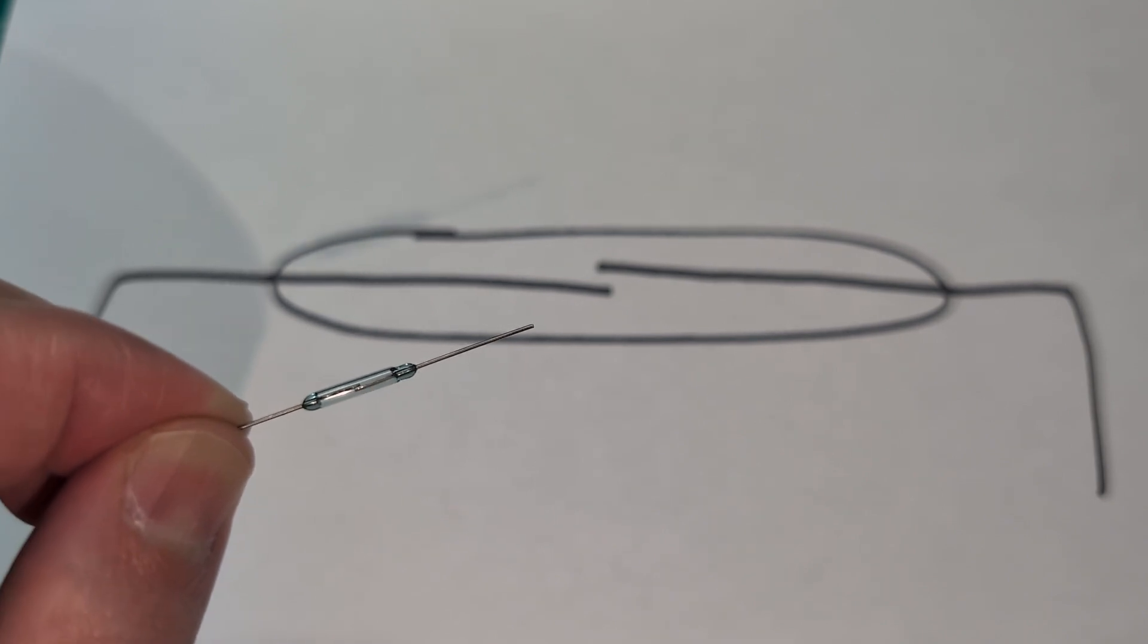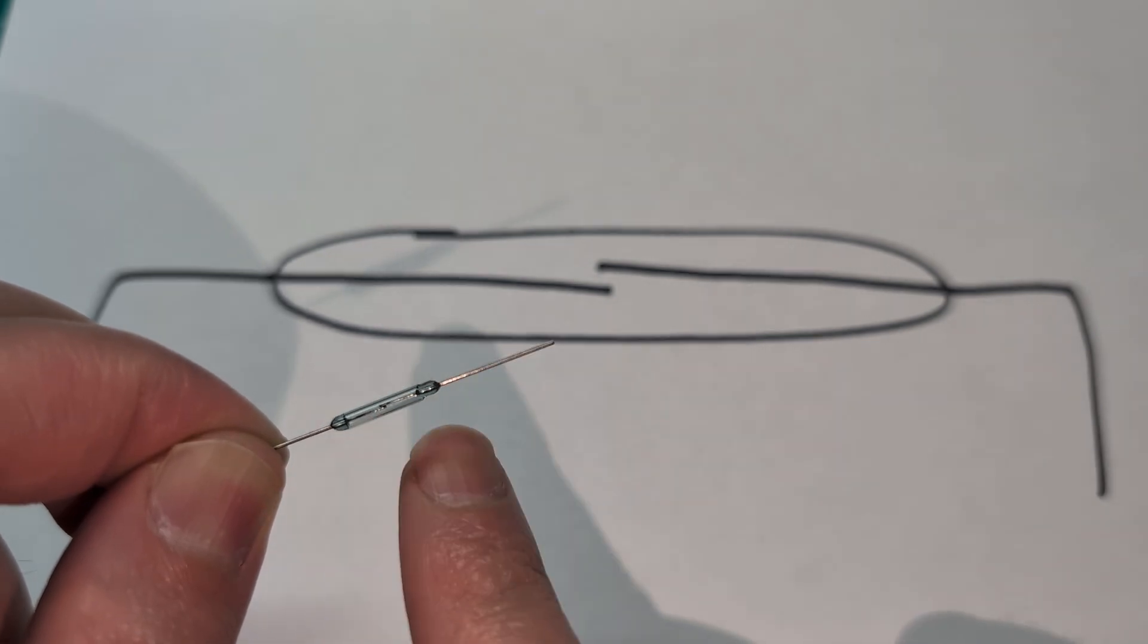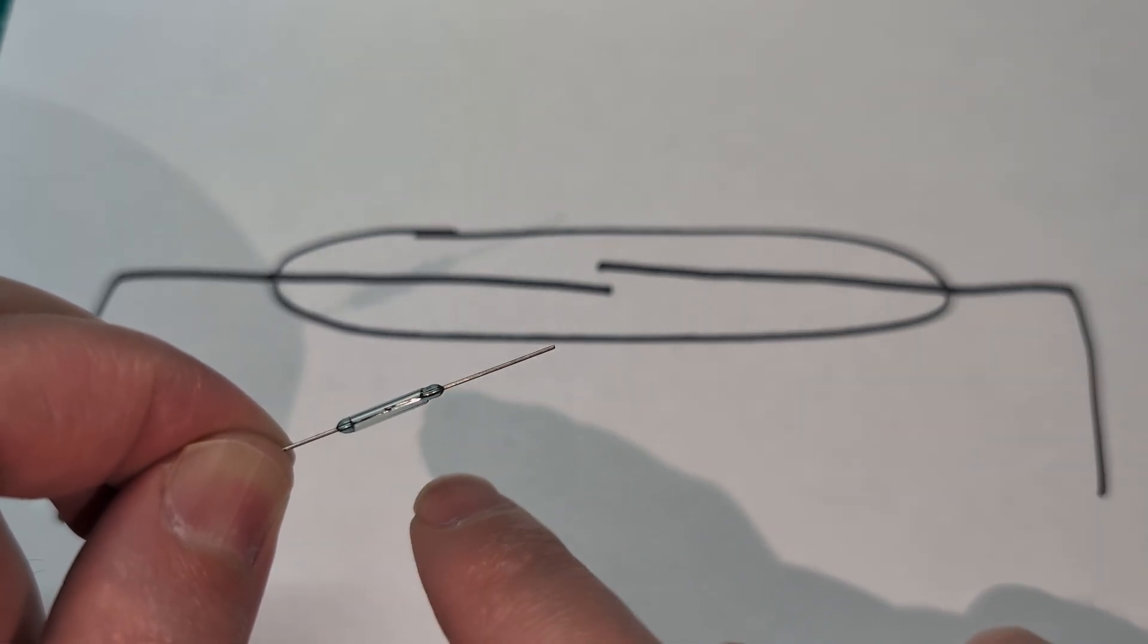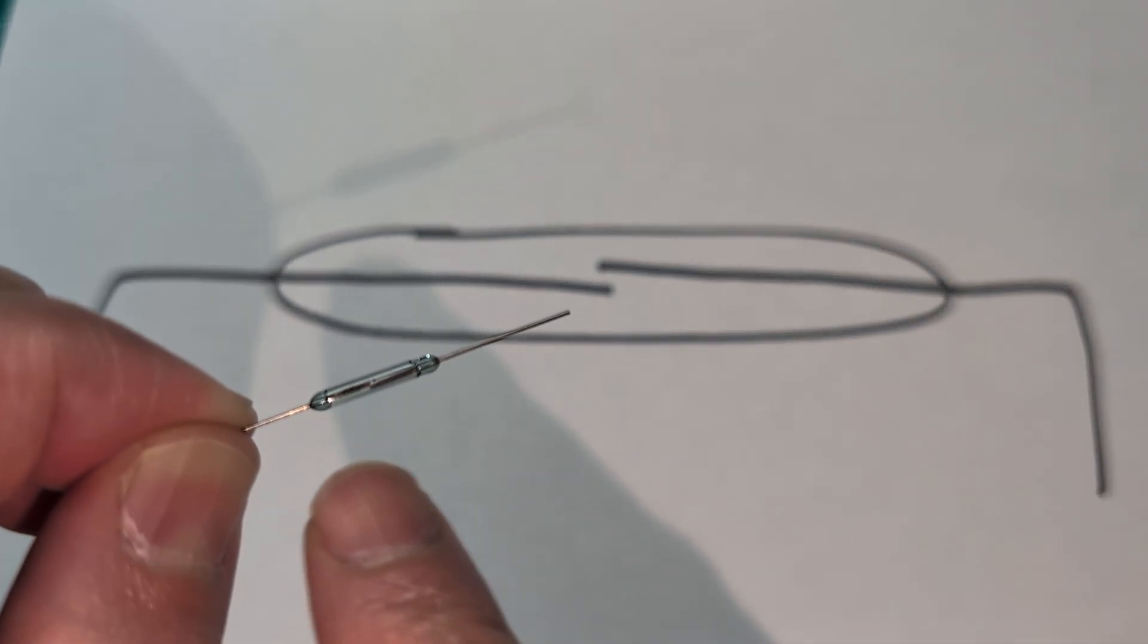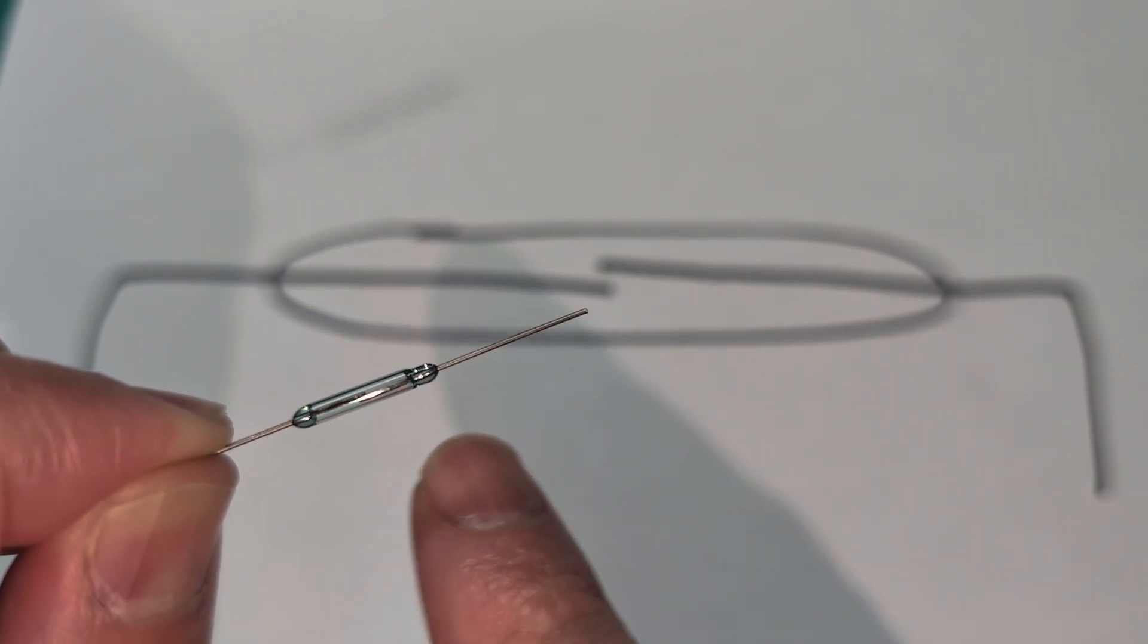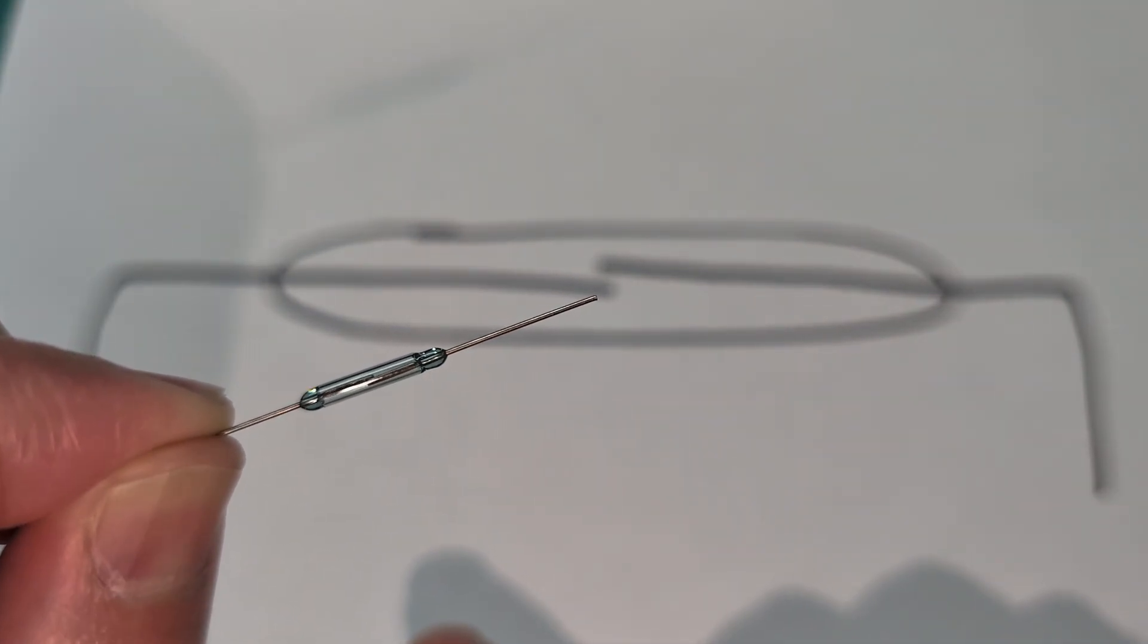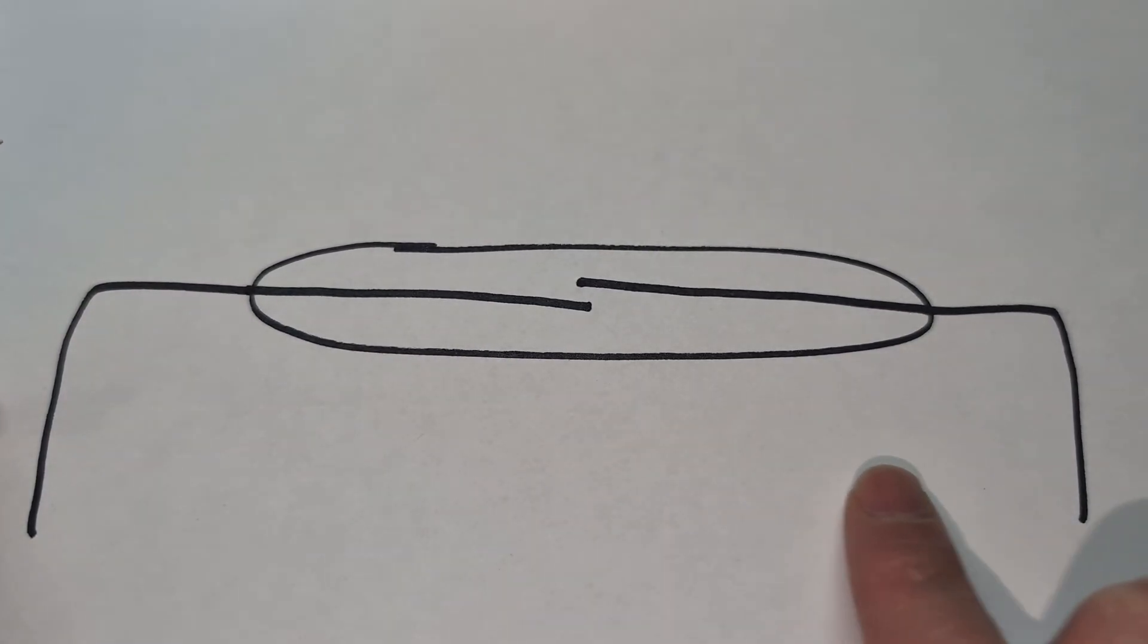This is a magnetic field reed switch. It's basically a switch that is open, but when there is a magnetic field it gets closed. You can see this glass case with two tiny metal pieces inside. If it's hard to see on the camera, I did draw a bigger size here on the paper just to explain how it works.